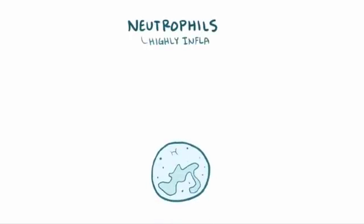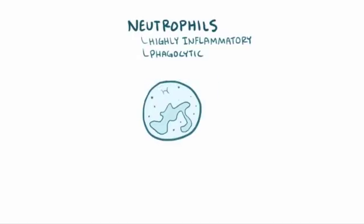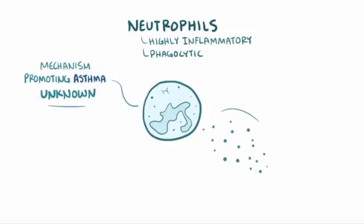Neutrophils are highly inflammatory phagocytic cells that gobble up infected or dead cells. How neutrophils promote asthma, though, isn't known, but another interleukin, interleukin-8, which is released by neutrophils, seems to play a key role in the disease.